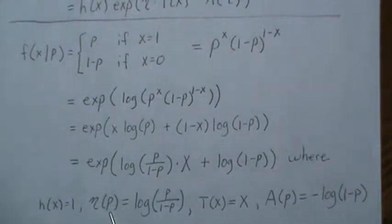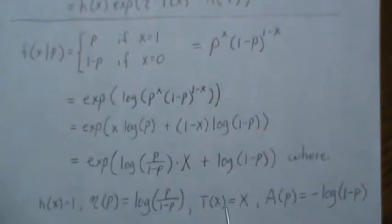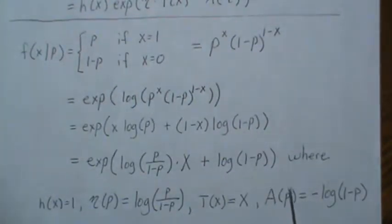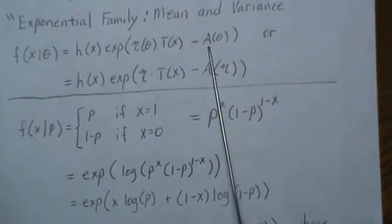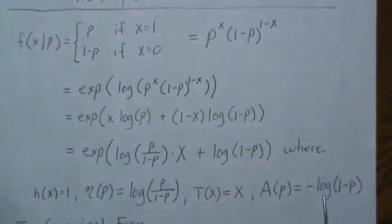This eta of p is this piece here, the sufficient statistic is x, and the log partition is minus log of 1 minus p. Remember, we need it minus this capital A, which is called the log partition, and so it's this.